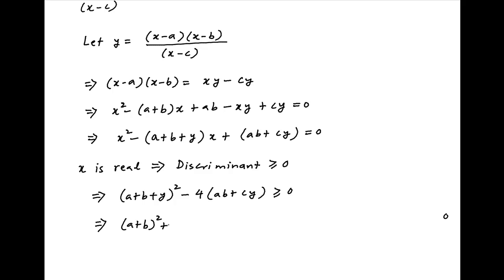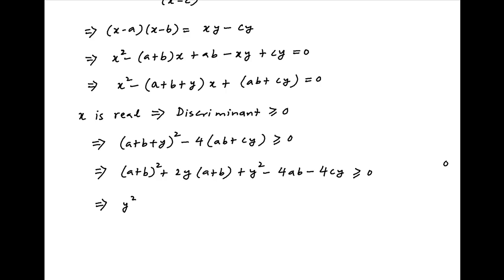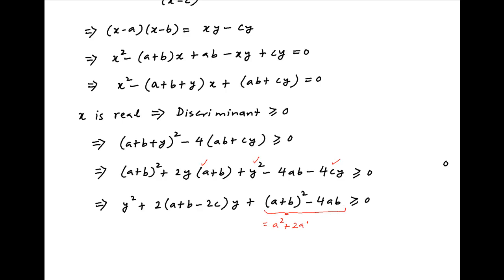Opening up the left-hand side, we get (a + b)² + 2y(a + b) + y² - 4ab - 4cy ≥ 0. This can be written as y² + 2(a + b - 2c)y + (a + b)² - 4ab ≥ 0. The last two terms, (a + b)² - 4ab, equal a² - 2ab + b² = (a - b)².